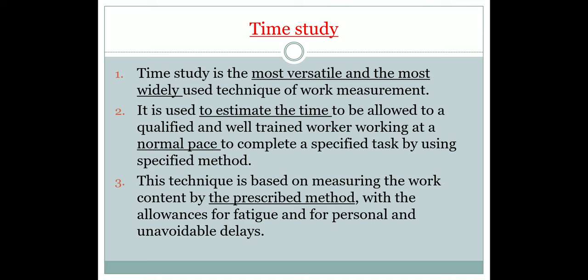What is meant by work sampling? Work sampling is a technique in which a large number of observations are made over a period of time for one or a group of machines. Each observation records what is happening at that instant, and the percentage of observations recorded for a particular activity or delay is a measure of the percentage of time during which that activity or delay occurs.